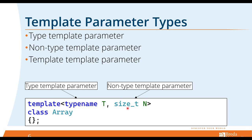Declaring a class template is similar to declaring a class, except it starts with the `template` keyword followed by the template parameter list. The template parameter list can contain three types: a type template parameter (using `typename` or `class` followed by the type name, commonly T), a non-type template parameter used to define some constant value, and a template template parameter. The type name T becomes an alias for whatever type is used to instantiate the class template. A non-type template parameter can be used to define some kind of constant value in your class template.